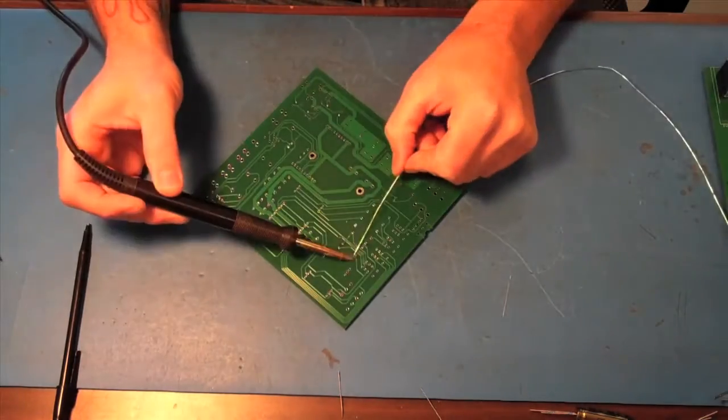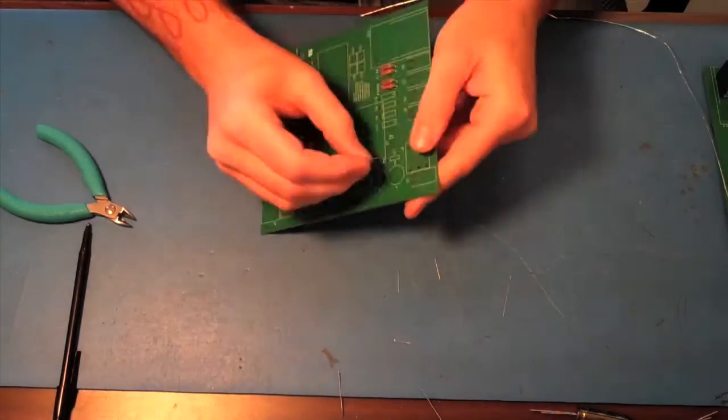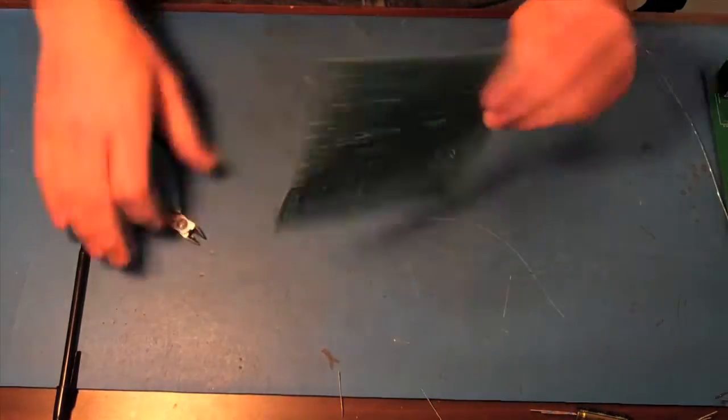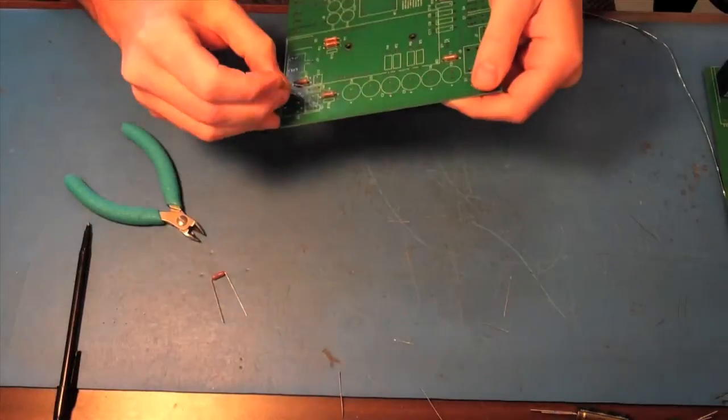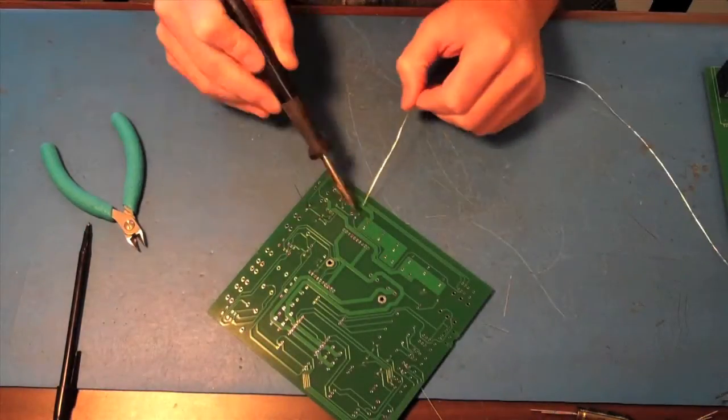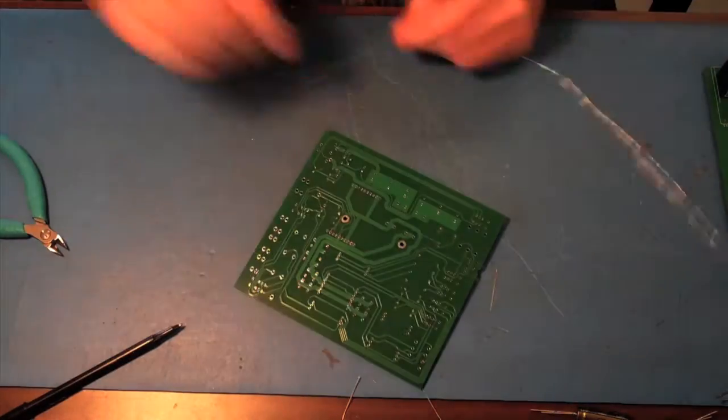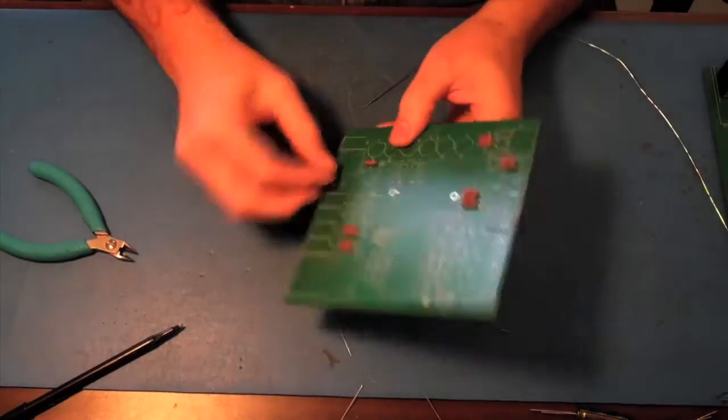Right now he's installing the resistors first. Is there a reason that he does that? Yeah, it's because for height reasons it's easier to use the lowest height part first. You can flip the board over and just work your way up, because otherwise it's more chaotic that way.